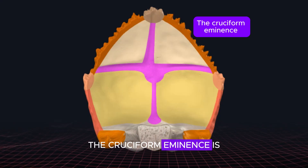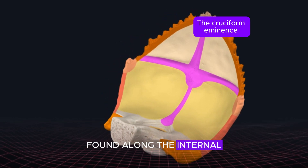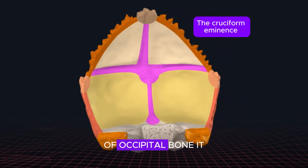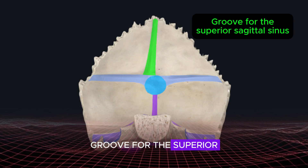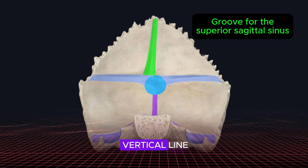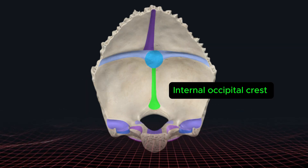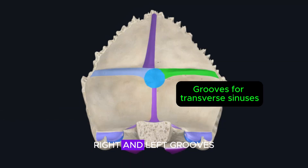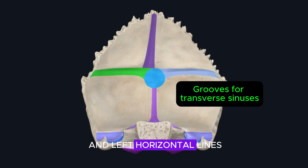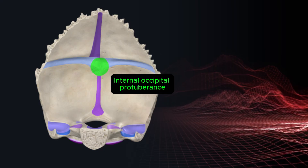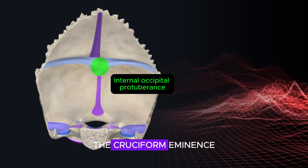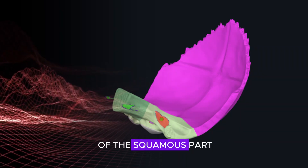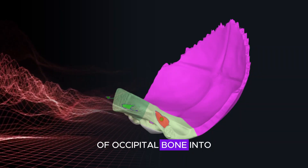The cruciform eminence is the cross-shaped arrangement found along the internal surface of the squamous part of the occipital bone. It consists of the groove for the superior sagittal sinus (superior vertical line), the internal occipital crest, the right and left grooves for the transverse sinuses (horizontal lines), and the internal occipital protuberance at its center. It divides the internal surface into four fossae: two cerebral and two cerebellar.